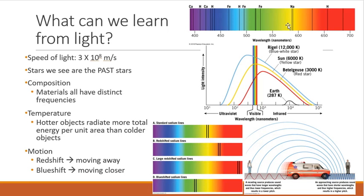Temperature can be told by light. So the hotter an object is, it's going to radiate more energy per unit than a colder object. Hotter objects tend to be blue. Colder objects are red.